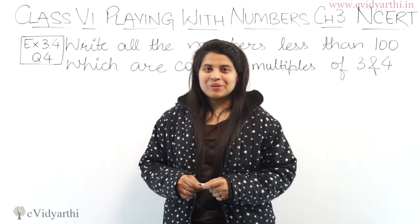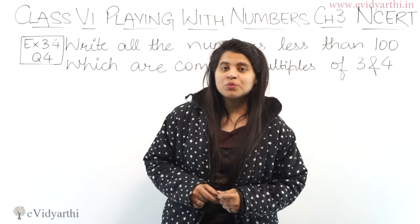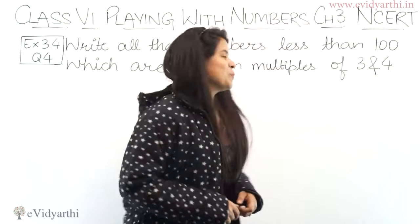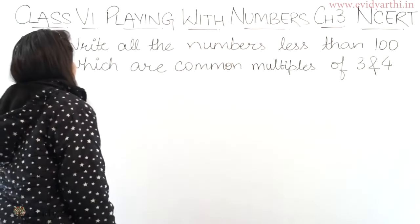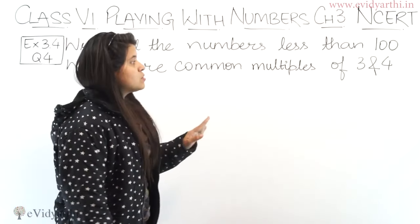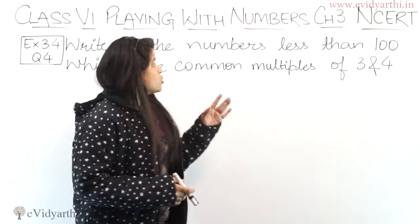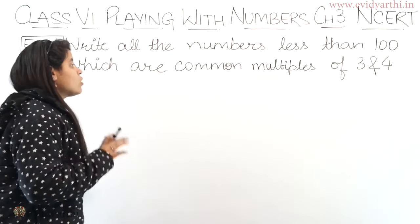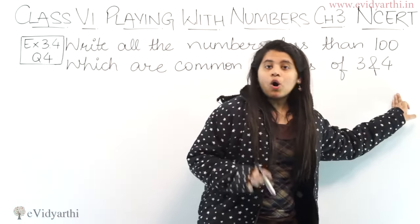Hello everyone, this is Malci from Evidyarthi and coming to question number 4, exercise 3.4. In this question we have to write all the numbers less than 100 which are common multiples of 3 and 4. So you have to write numbers here which are common multiples of 3 and 4.